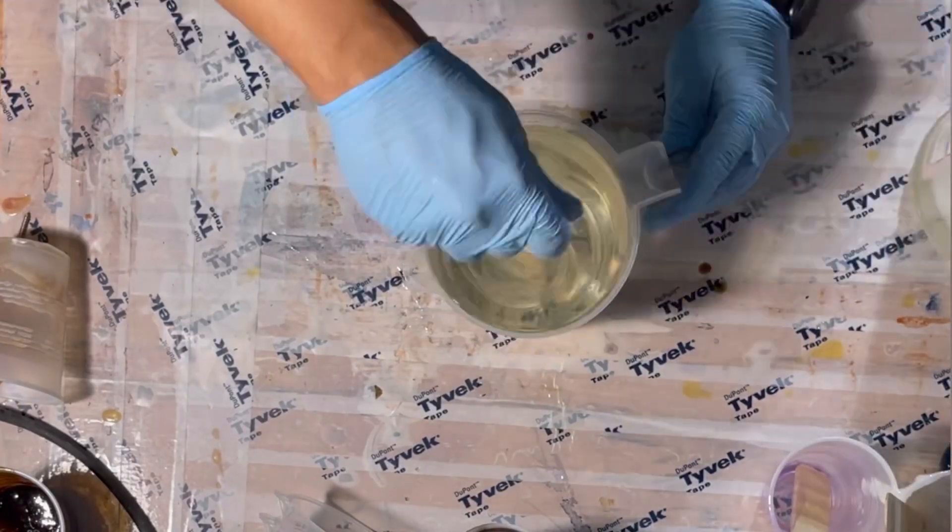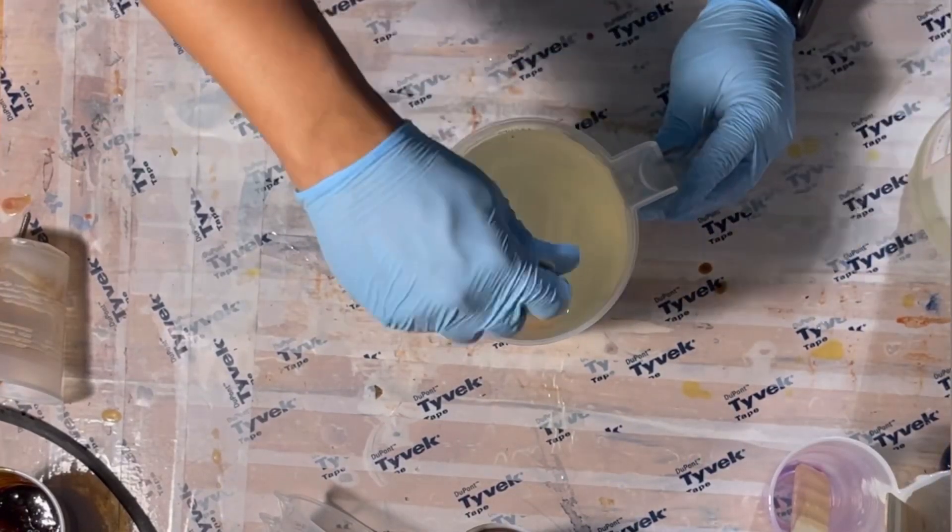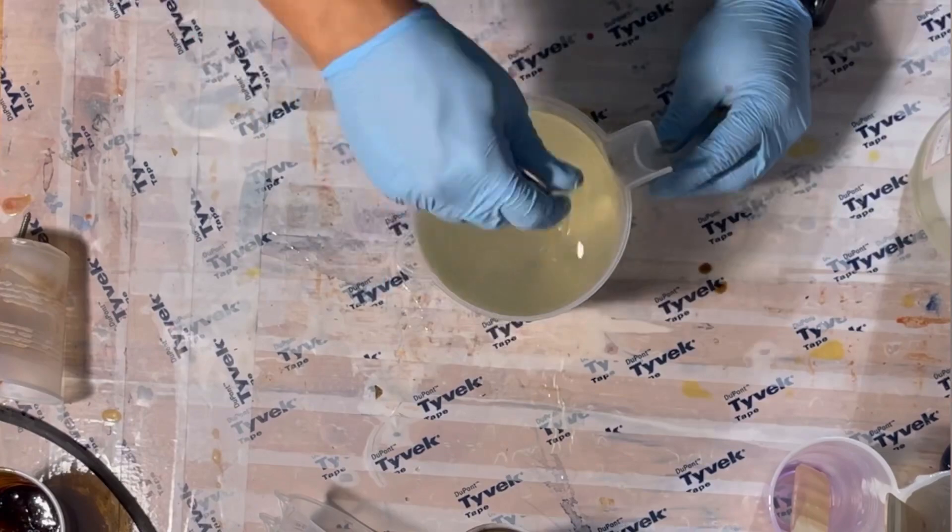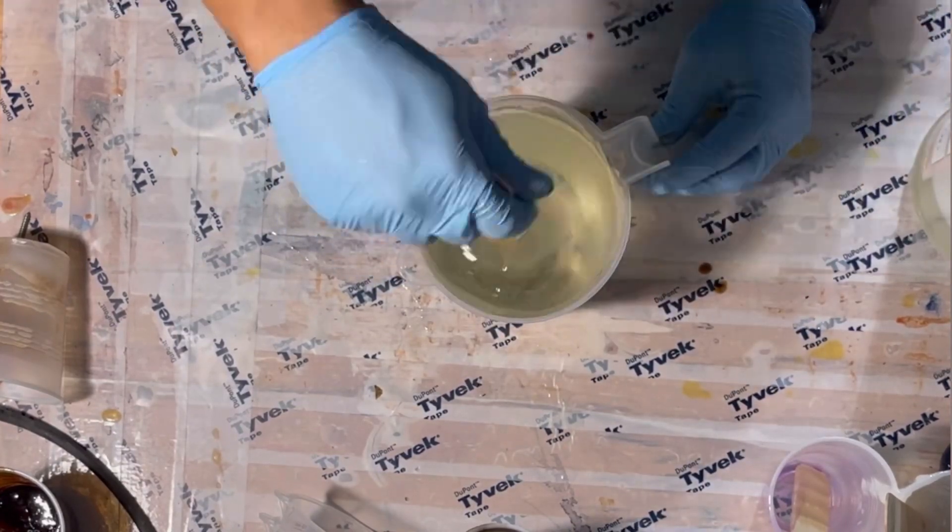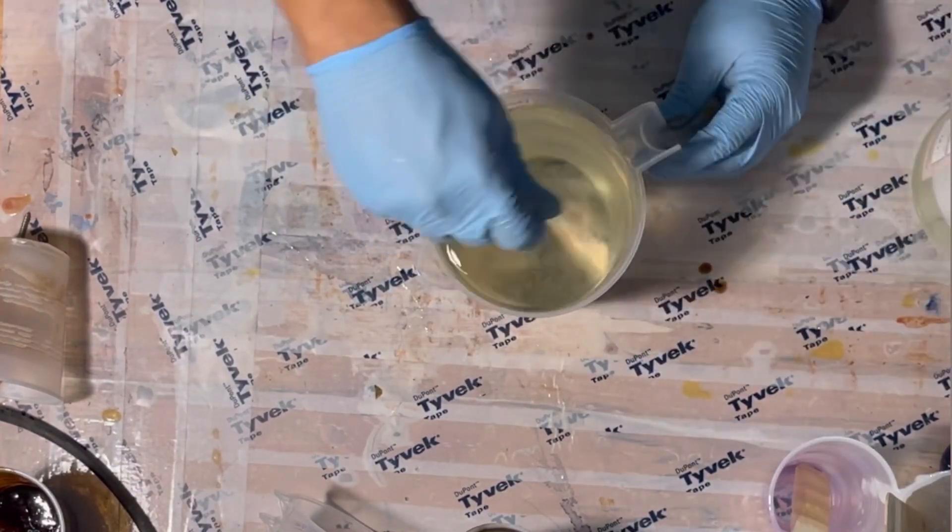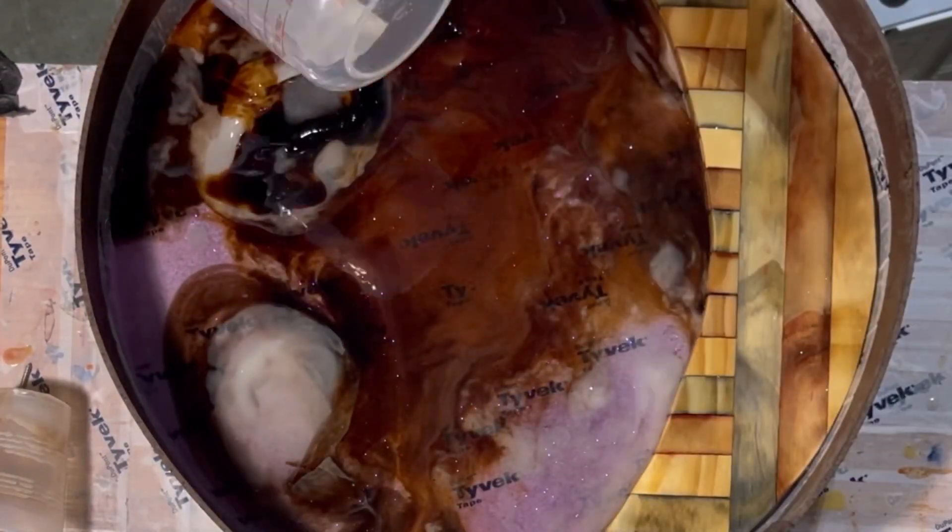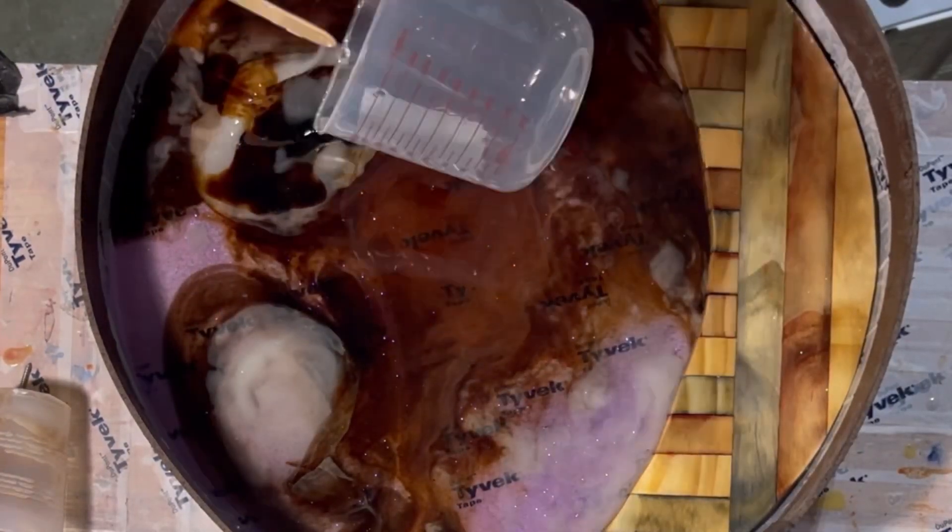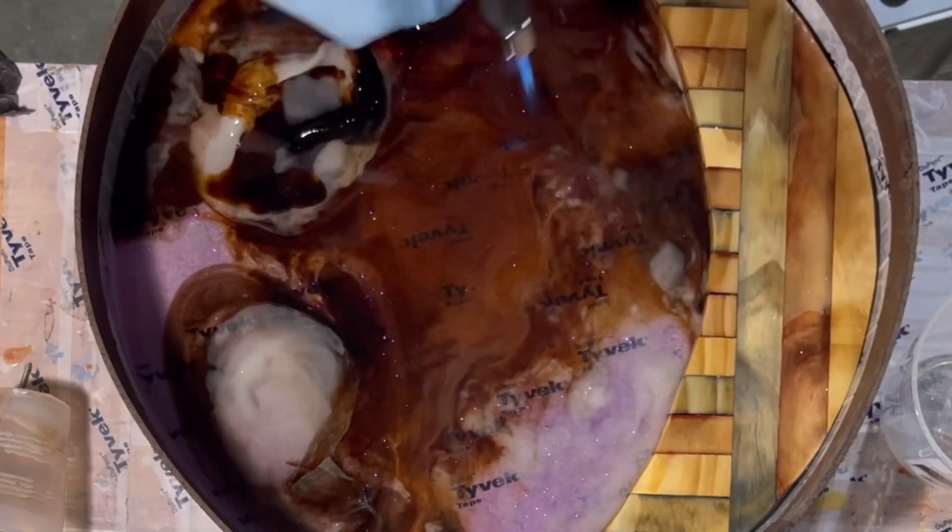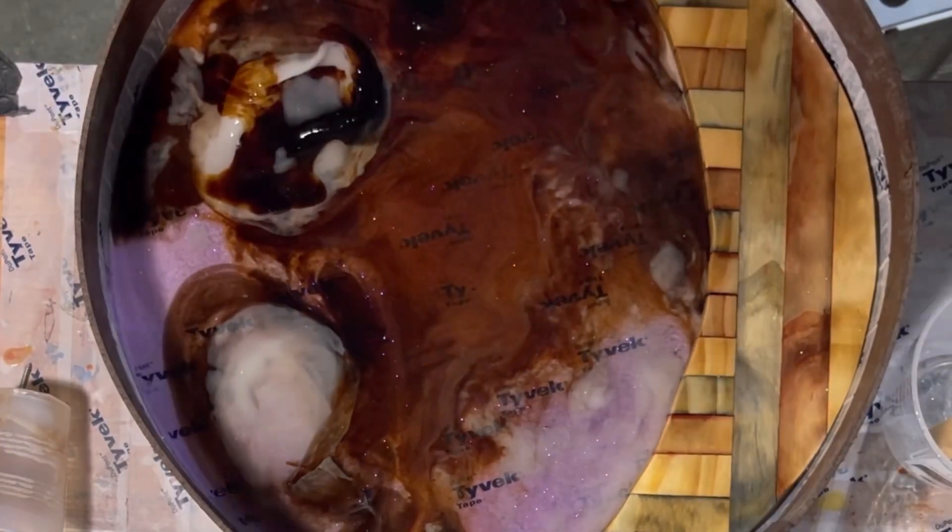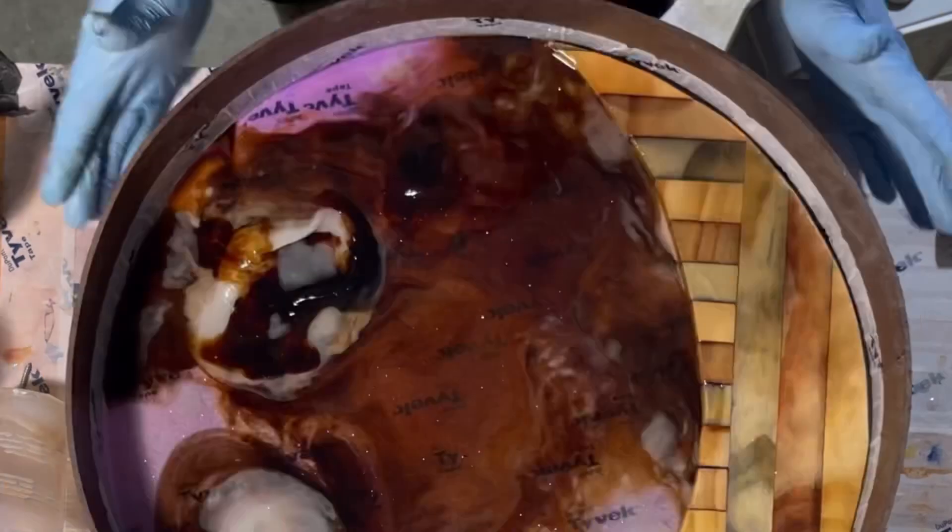I took so long that the epoxy started curing itself, so some of this ended up having surface texture. Now I'm going to put clear epoxy over it so it kind of almost looks like there's a 3D effect, which I didn't expect. I'm heating it up and I'll put it away.